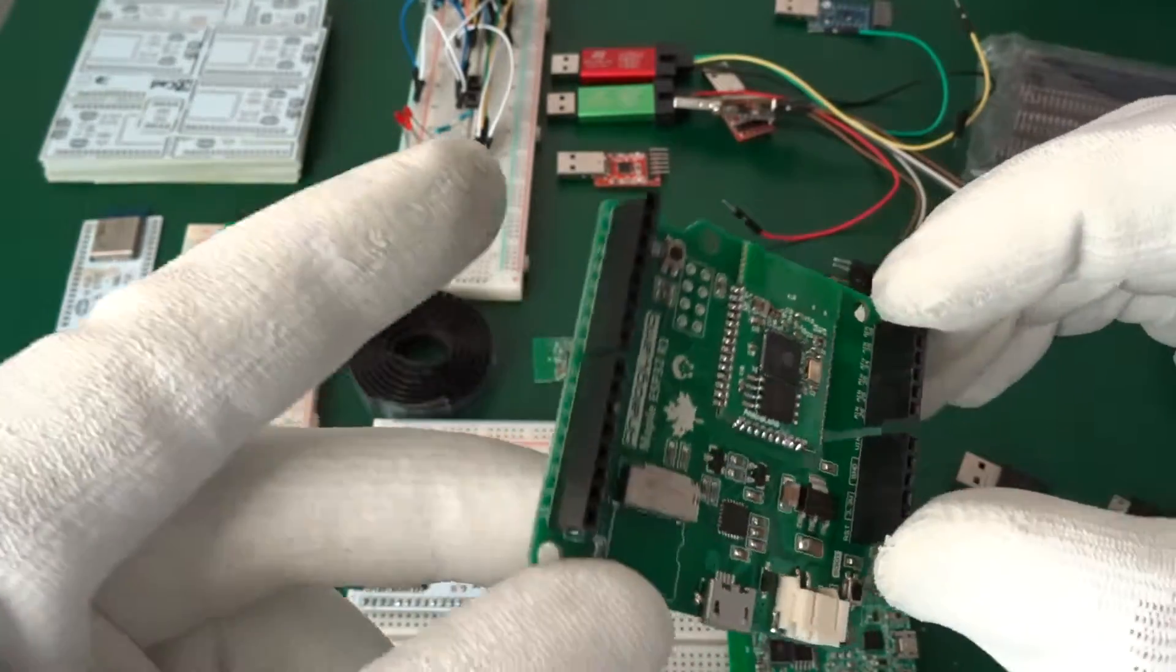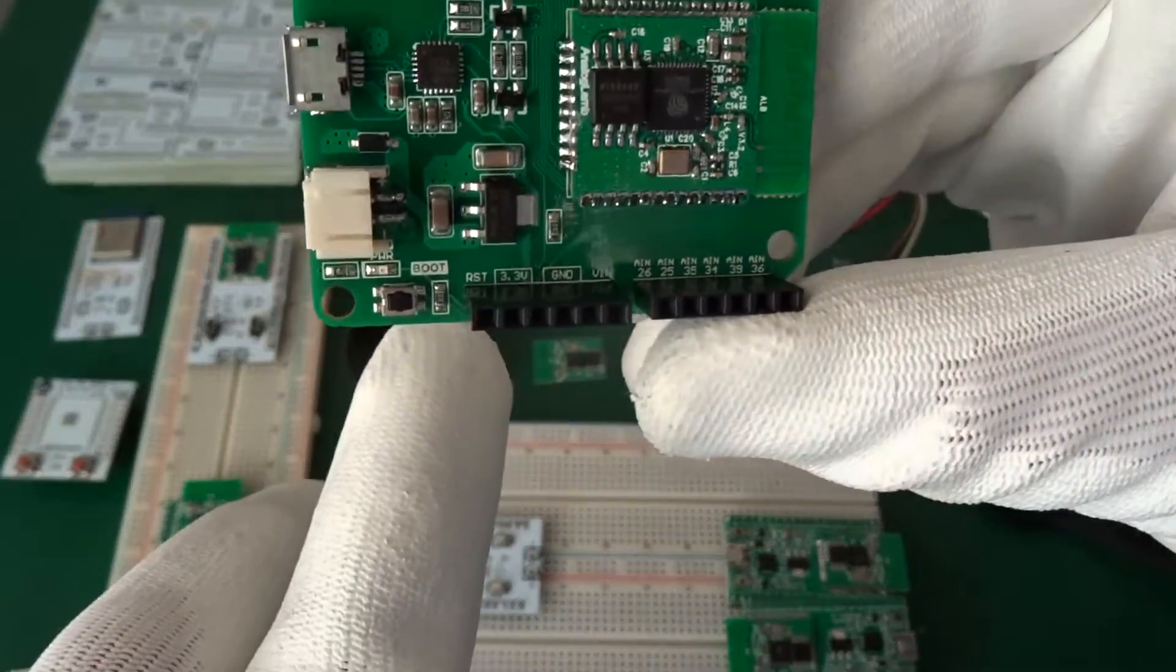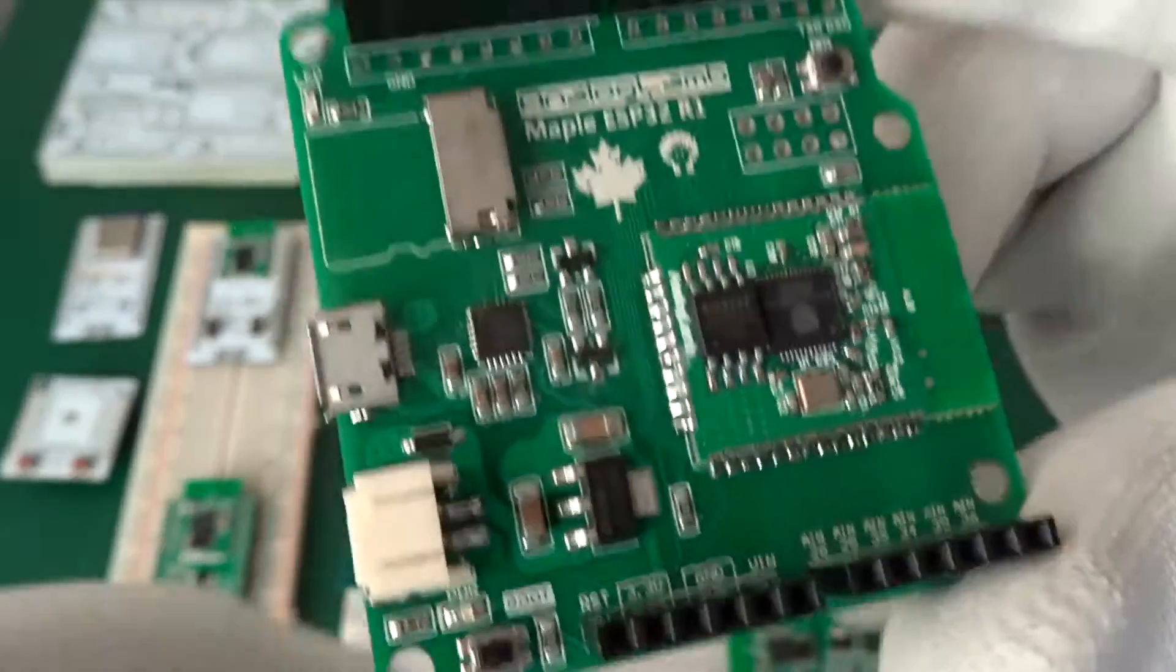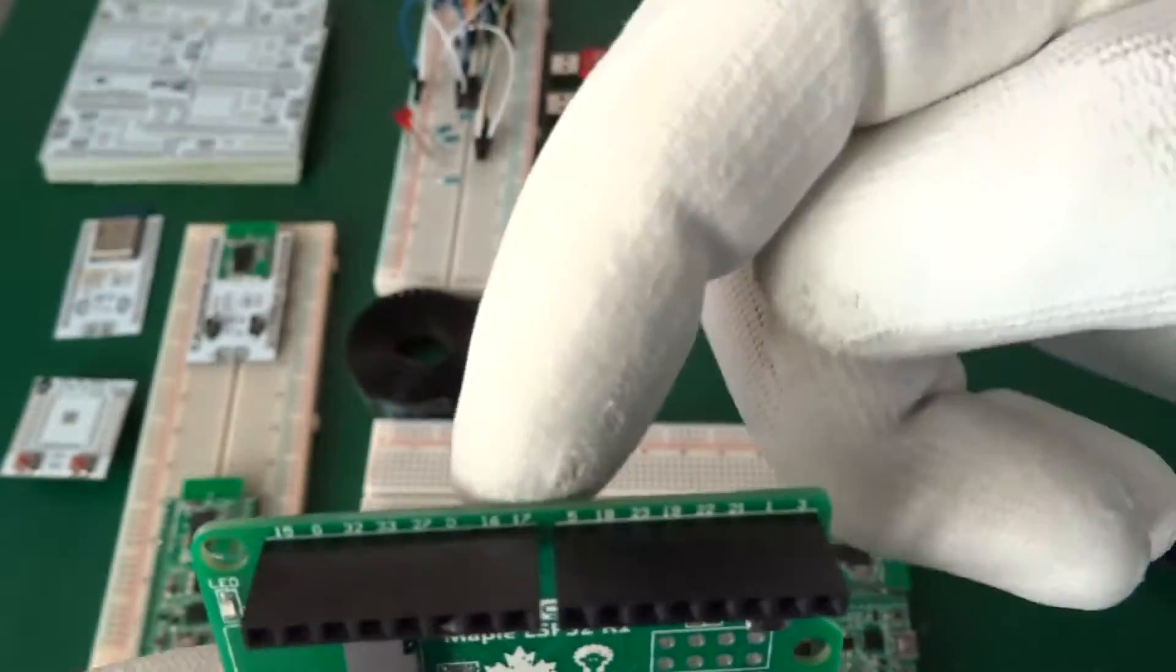On the bottom side we have some power pins and the analog outputs, and on the top we have our digital pins, all the GPIO pins for digital.